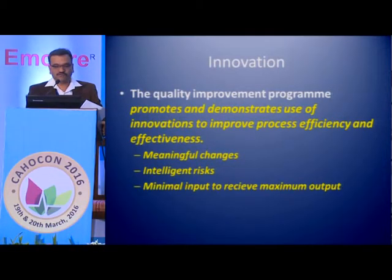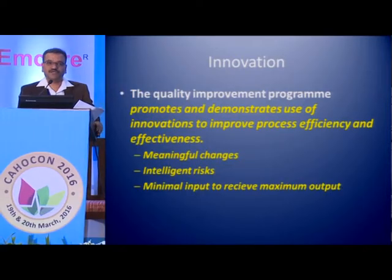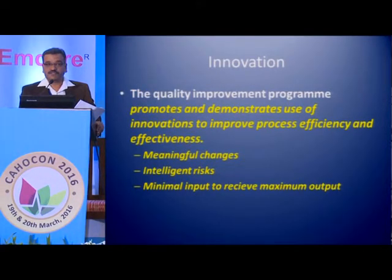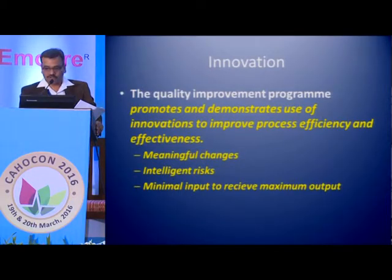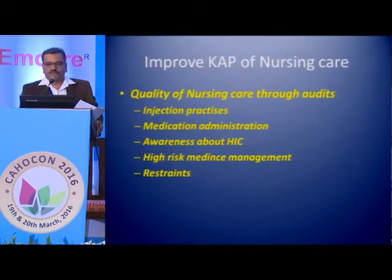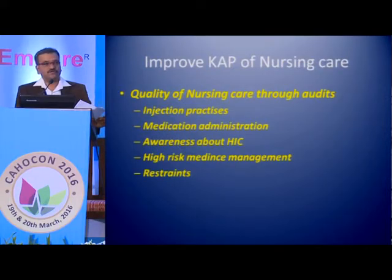To start with the CQA chapter, as you can see, there is one standard and two objective elements. The first one is the stress on innovation. The quality improvement program promotes and demonstrates use of innovation. What is innovation? It is a meaningful change, taking intelligent risk, minimal input to get maximum output. As we saw through many presentations today and yesterday, there were many examples of innovations. Unless we innovate our processes — both the patient care as well as the managerial processes — we can't get maximum efficiency and output. So there is a focus on innovation.